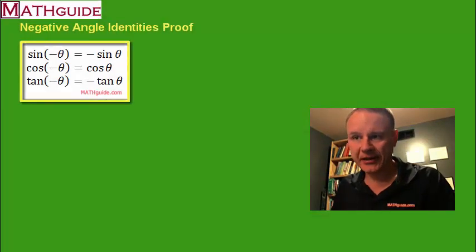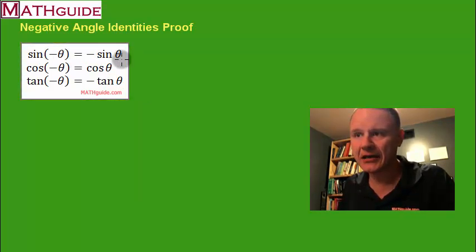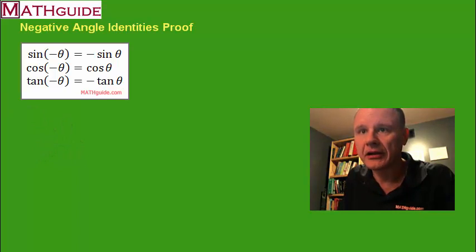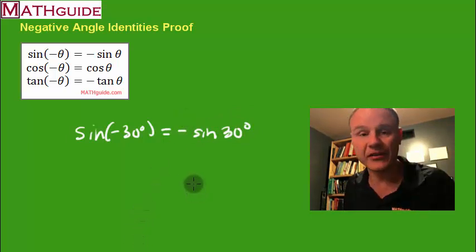I've placed the negative angle identities there on the screen. And I want you to see that sine and tangent are really similar. If you were to find, let's say, the sine of a negative 30 degree angle, this is really just like finding the sine of a 30 degree angle, but you'll just take the opposite of it. So if you know how to find the sine of 30, you could find the sine of negative 30.